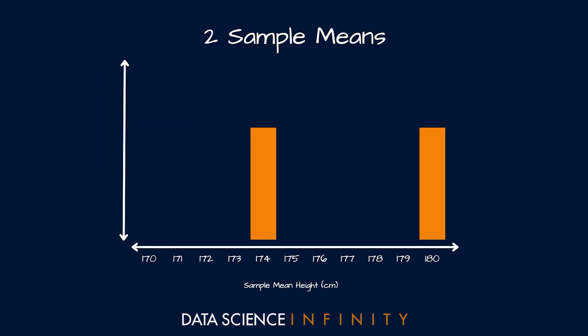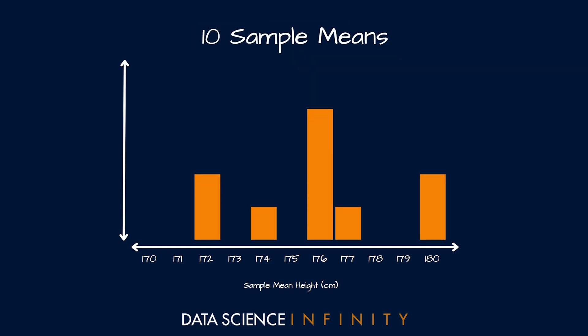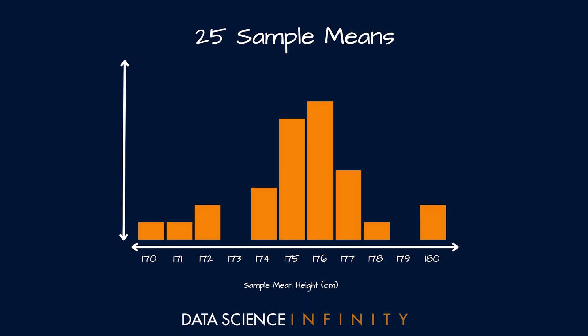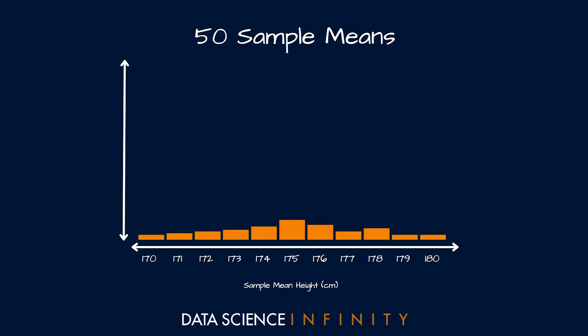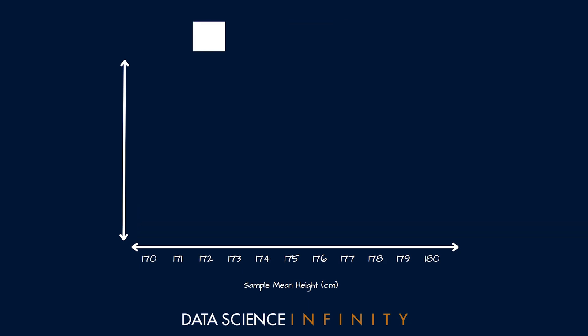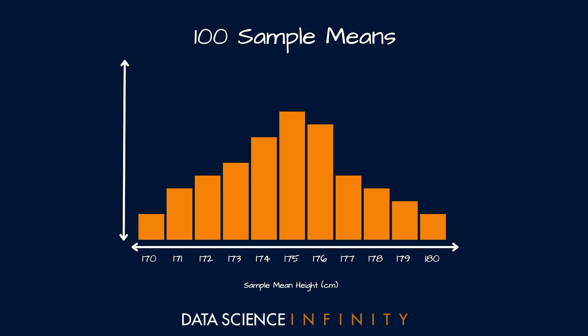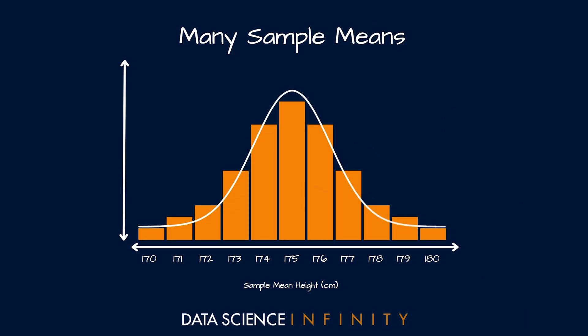With just two sample means plotted, there's not much to see. But as we obtain more and more random samples from the population and plot those sample means, watch what happens: at 10 sample means, at 25, at 50, and at 100 sample means, the more samples we take — just like the central limit theorem says — the closer and closer this distribution of sample means gets to a true normal distribution. How cool is that?